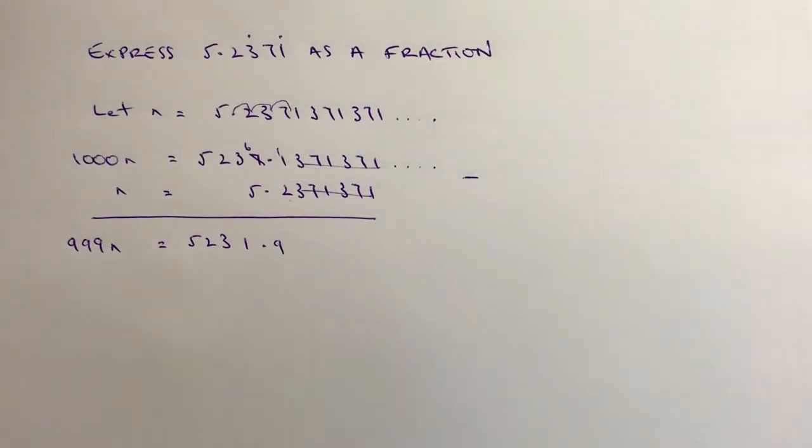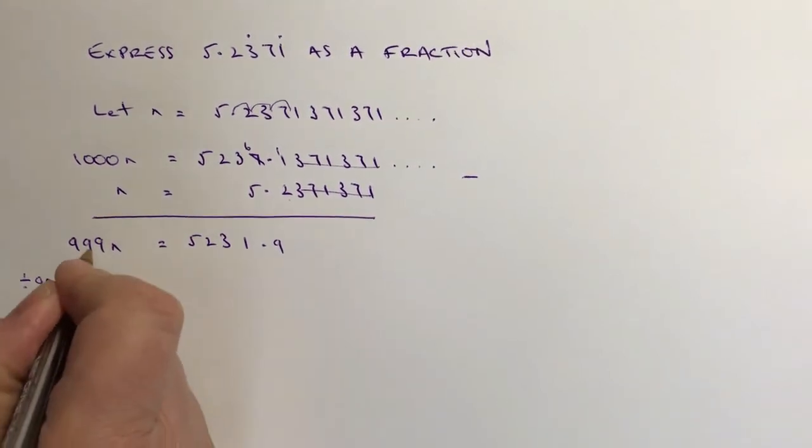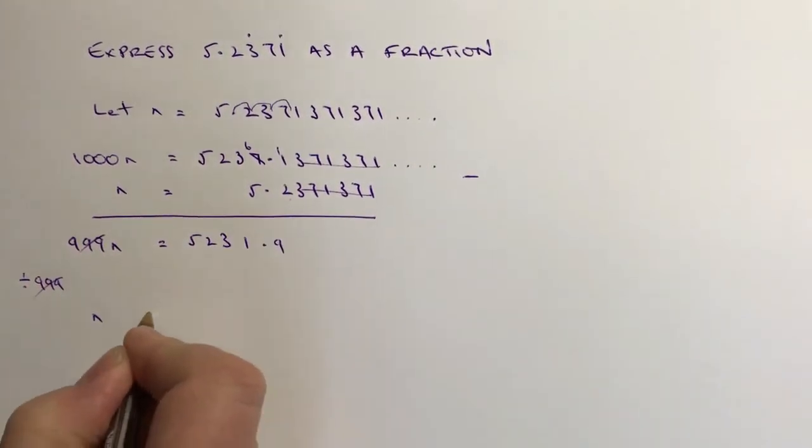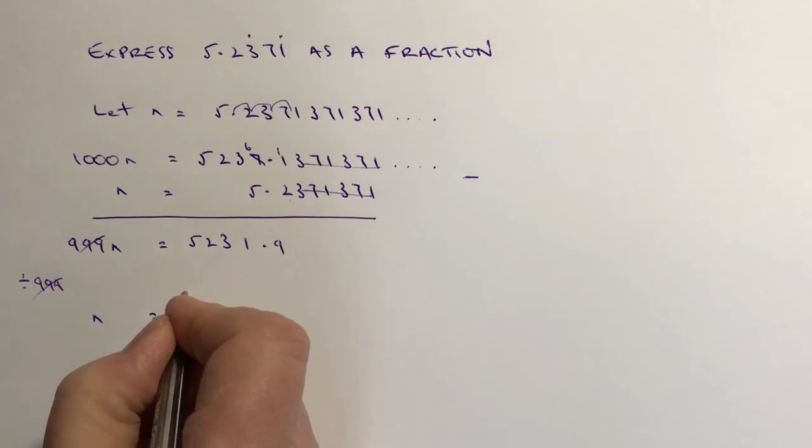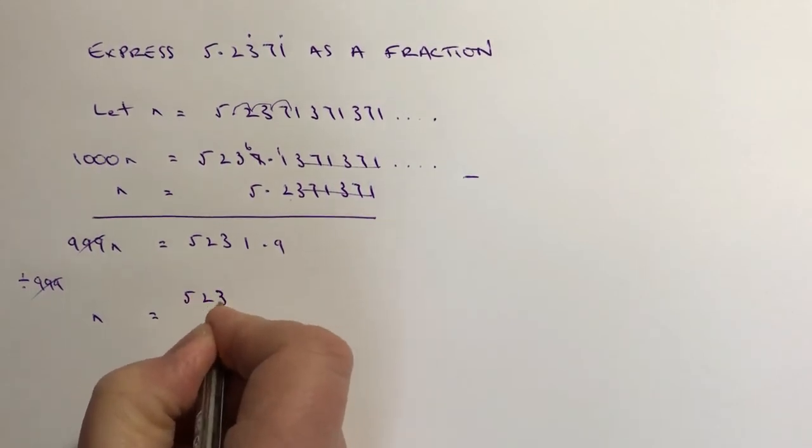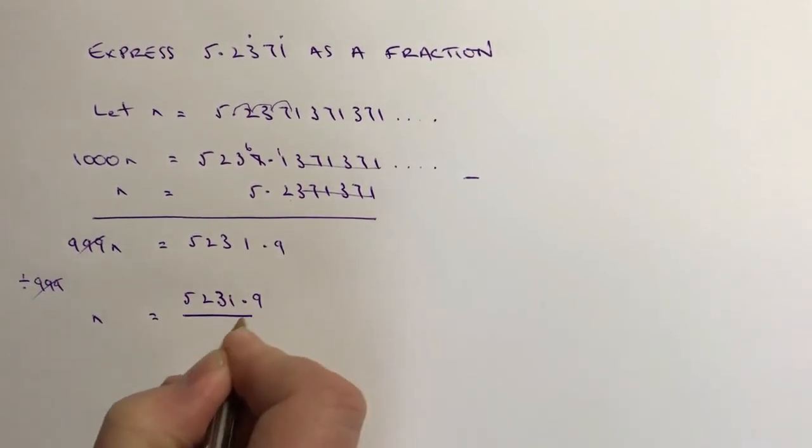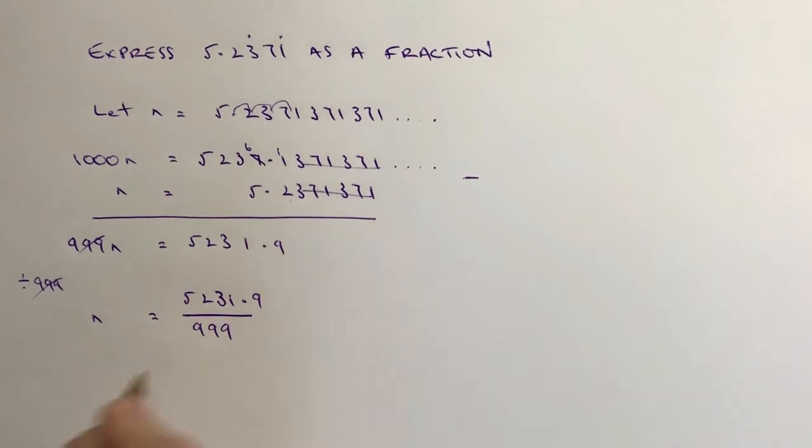So I'm in a position now where I can use this information to create the fraction. So if I divide through by 999, it means I get this value of n here and this side will become 5231.9 divided by 999.